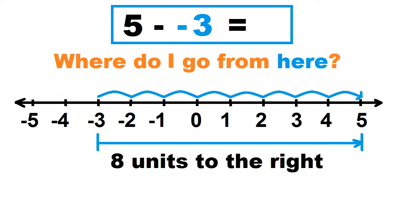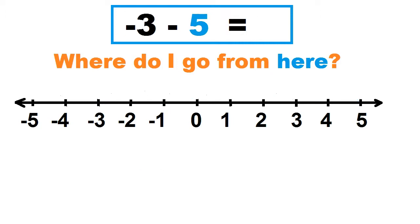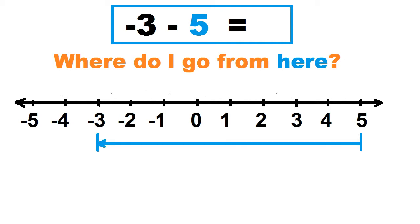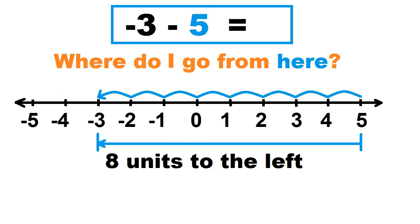Another example: negative 3 minus 5. Where do I go from 5? Count the number of units from 5 to negative 3, and take note of the direction. To the right is positive, to the left is negative. Let's count: 1, 2, 3, 4, 5, 6, 7, 8. That's 8 units to the left. So negative 3 minus 5 equals negative 8.